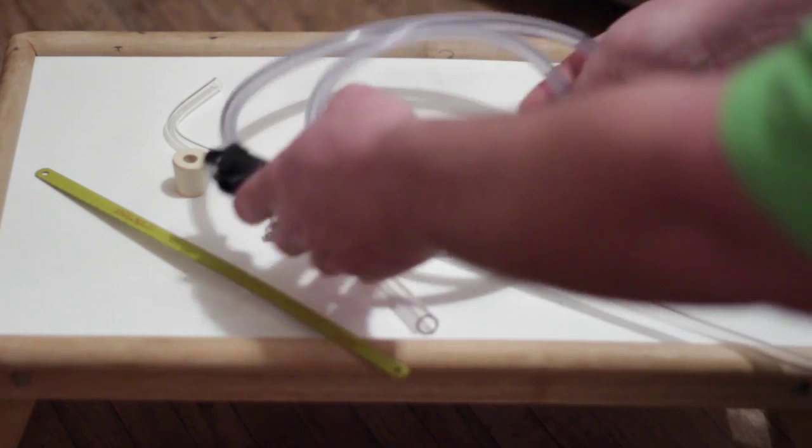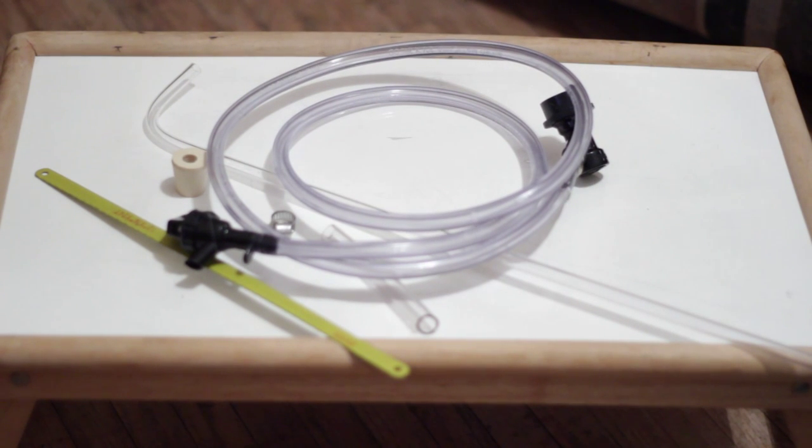Finally you'll need a way to connect the beer gun to your keg. A simple picnic tap attached to a line of tubing and a liquid connect is all you'll need.